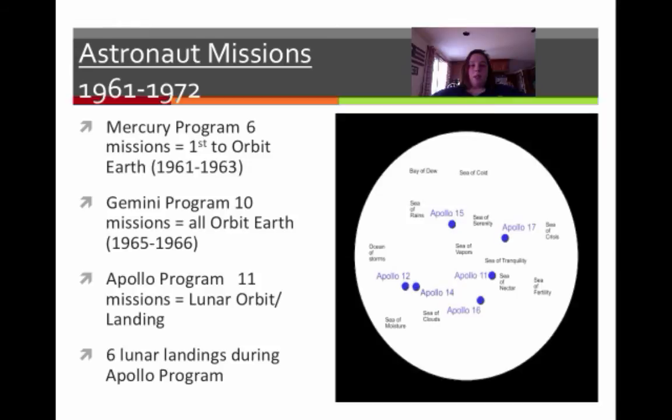So astronaut missions. The Mercury program had six missions. They were the first to orbit the Earth, so that just means to travel once around. The Gemini program had 10 missions, and again, they all orbited the Earth, so each time we're advancing the technology, so we're learning more and more. The Apollo program, there were 11 missions, and these were both lunar orbits, so we orbited the moon and we landed on it. And then there were a total of six lunar landings during the Apollo program, and if you take a look at the picture I have here of the moon, it'll show you exactly where each of those landed.